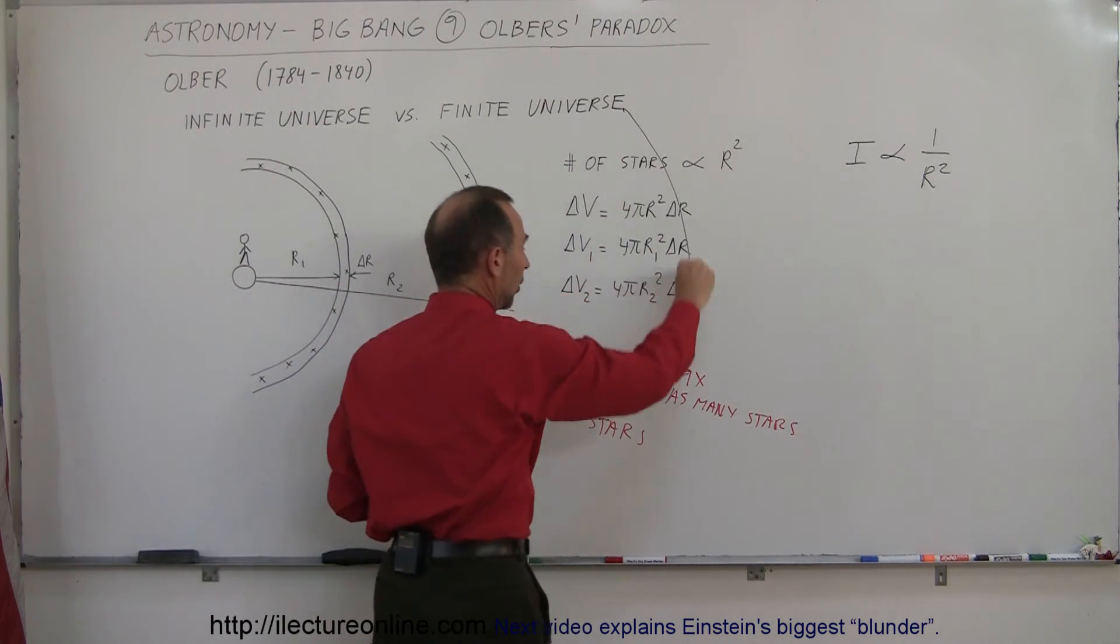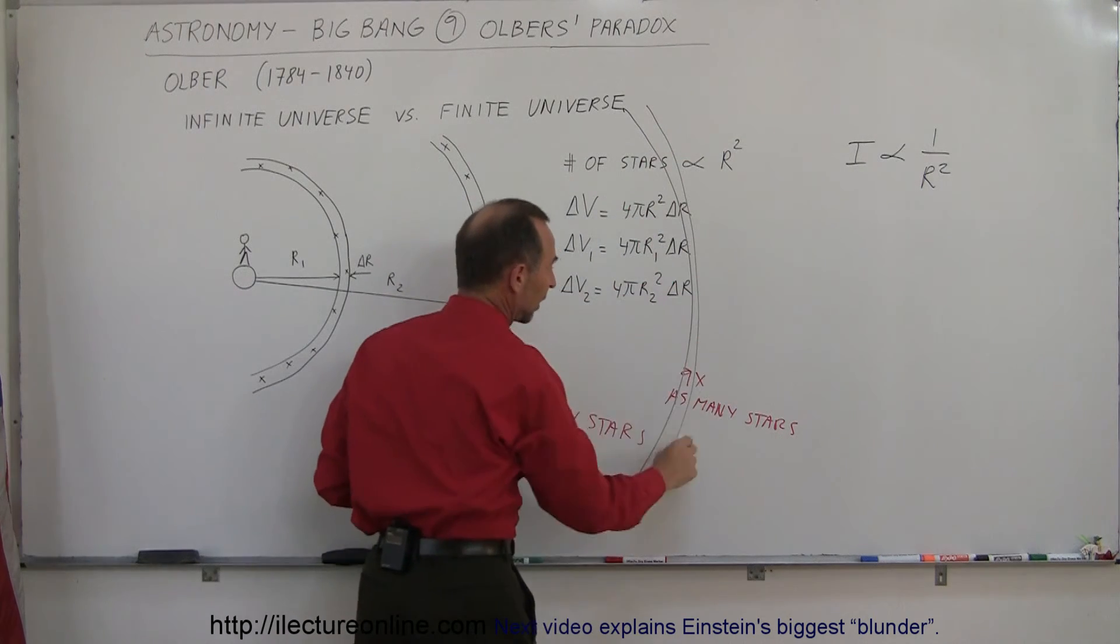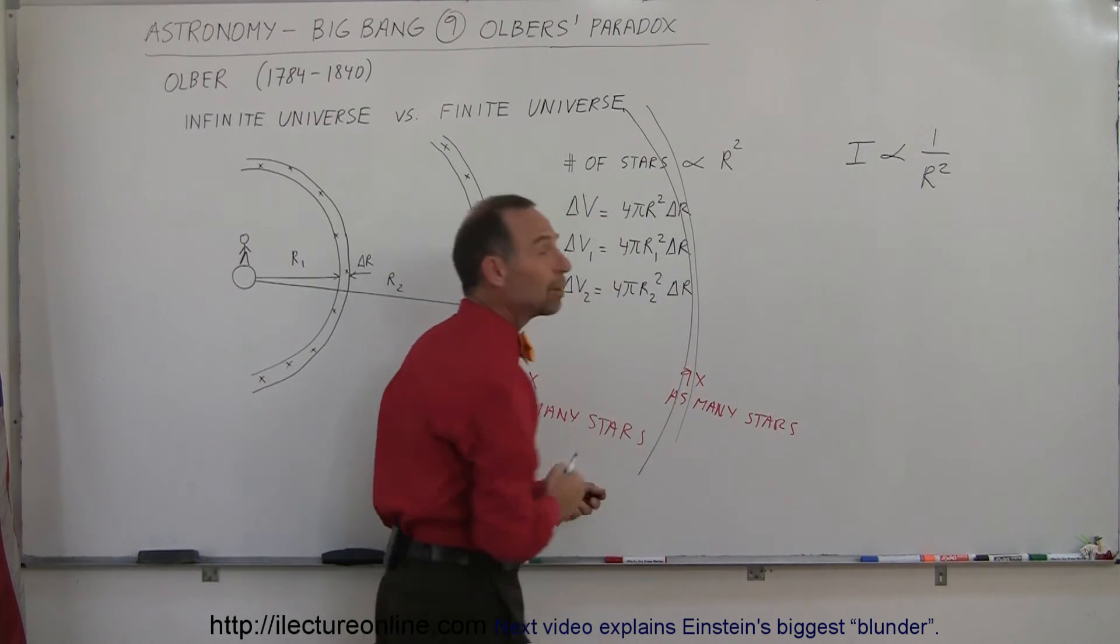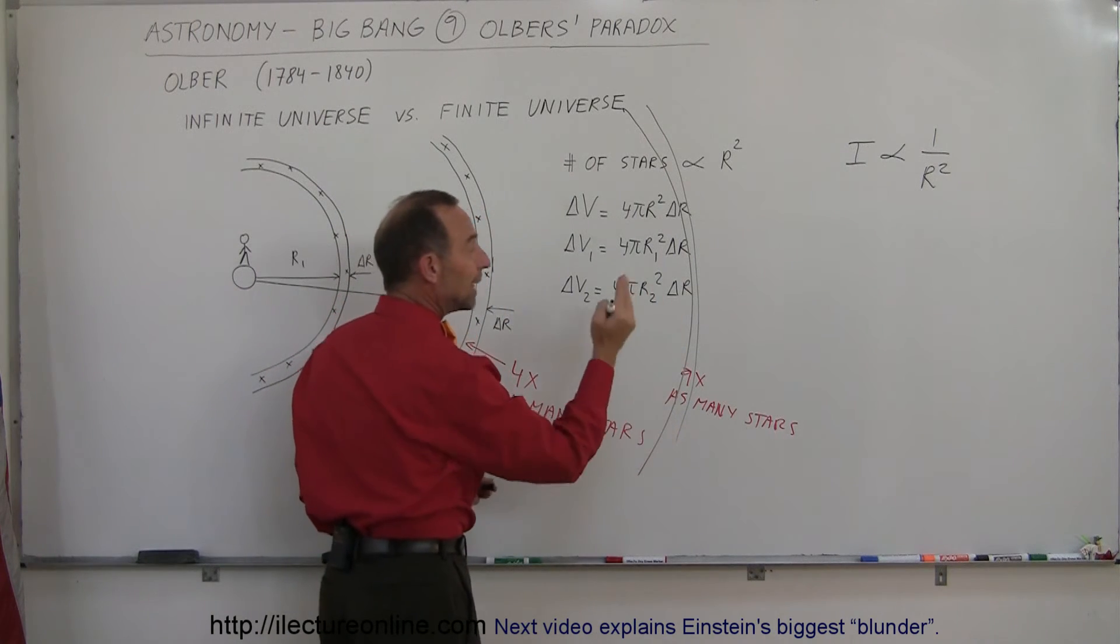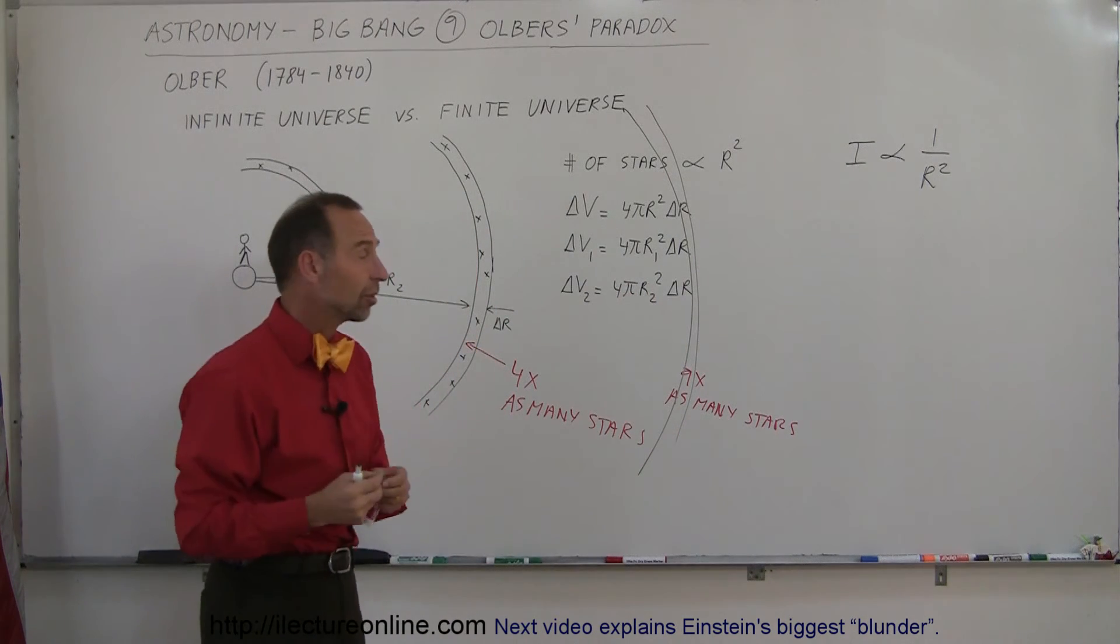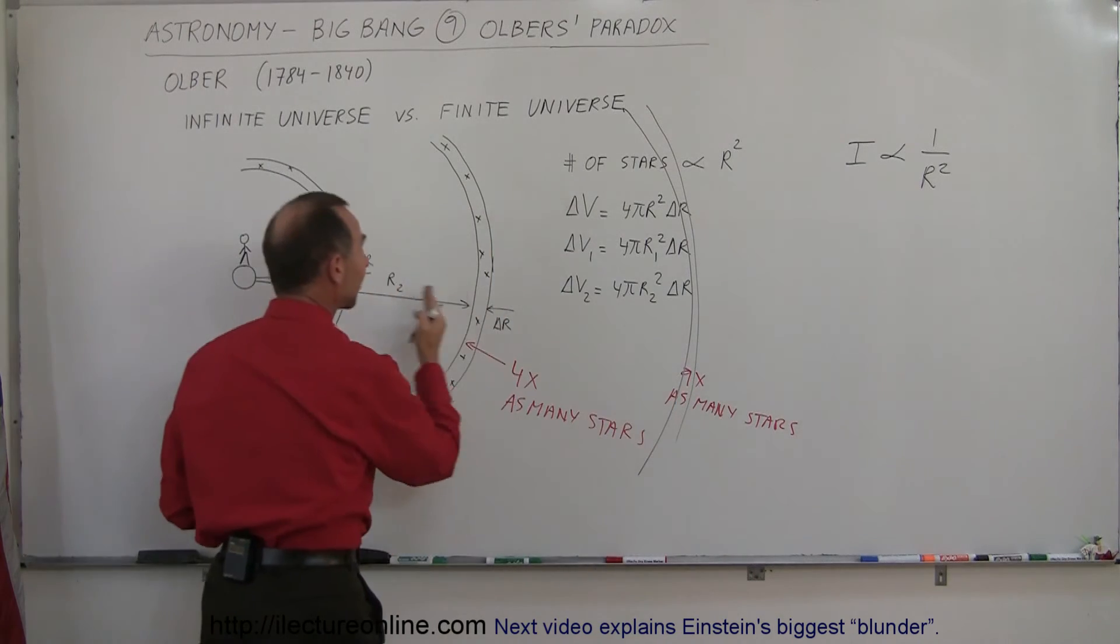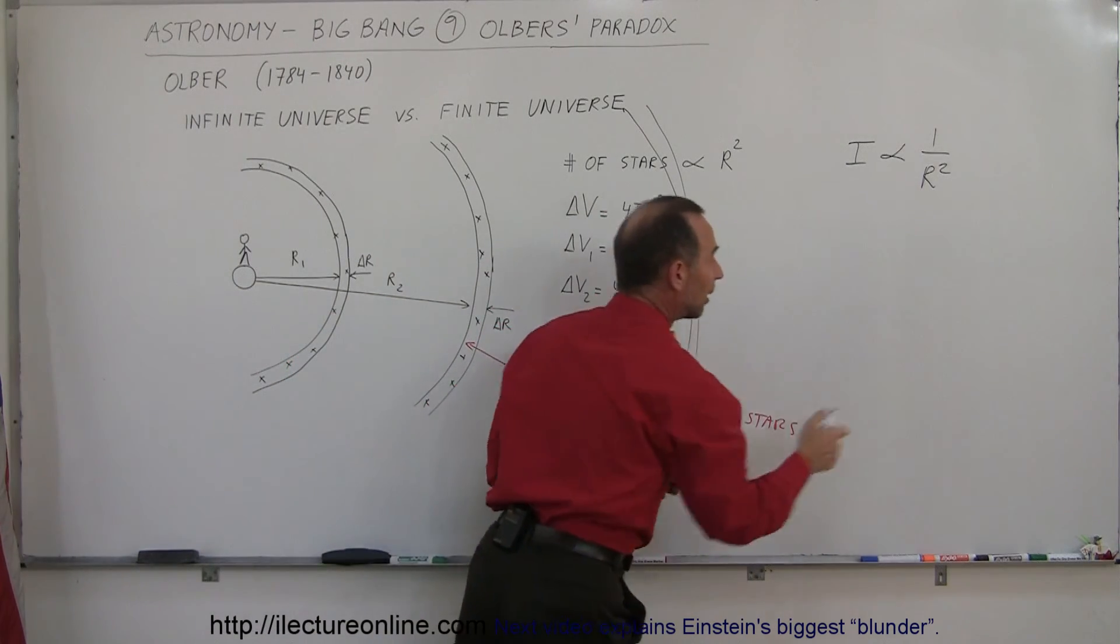And the amount of light from the third concentric sphere that is one light year thick, now three billion light years away, you would have nine times as many stars, each star would give you one-ninth as much light, so again you would get the same amount of light from that sphere, and on and on.